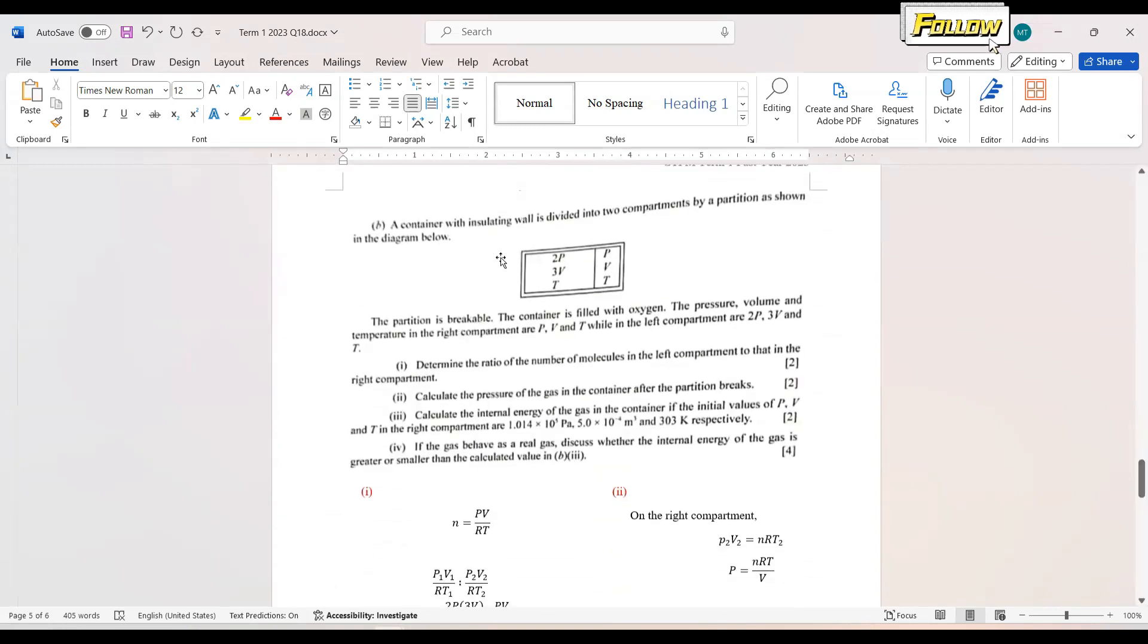We move on to the next question. A container with insulating walls is divided into two compartments by a partition as shown in the diagram. The partition is breakable. The container is filled with oxygen. Pressure, volume, temperature in the right compartment are P, V, T, while in the left are 2P, 3V, and T.